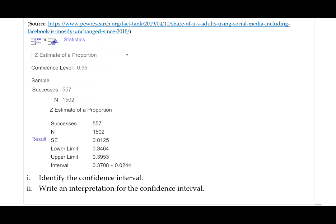You can see that the confidence level is given right here. This is a 95% confidence interval. The data that was given to us, the 557 people that use Instagram out of the 1,502 people in the sample, is shown right here. And then the lower limit and the upper limit are the values for the confidence interval.